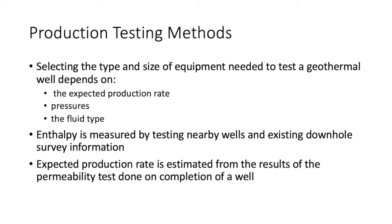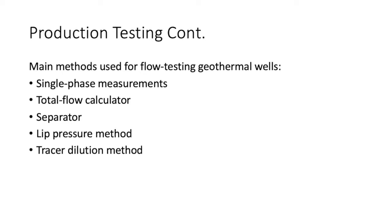Selecting the type and size of equipment needed to test a geothermal well depends on the expected production rate, the pressures of the well, and the fluid type. The expected fluid enthalpy will usually be known from testing nearby wells and downhole survey information. Expected production rate is estimated from permeability test results at well completion. Where environmental conditions permit, a brief vertical discharge directly into the atmosphere can be used with the lip pressure method to get a first estimate of long-term production potential. The main methods used to flow test geothermal wells are single-phase measurements, total flow calorimeter, separator, the lip pressure method, and the tracer dilution method.